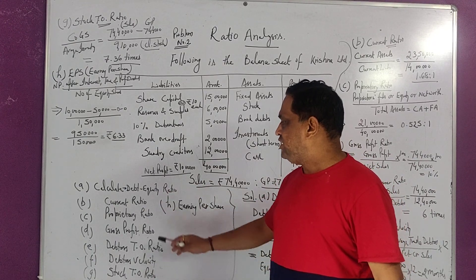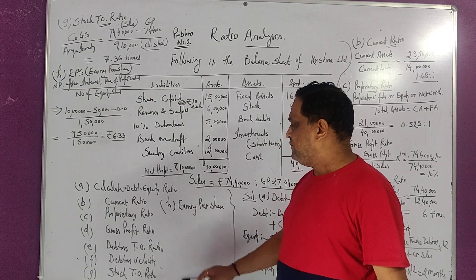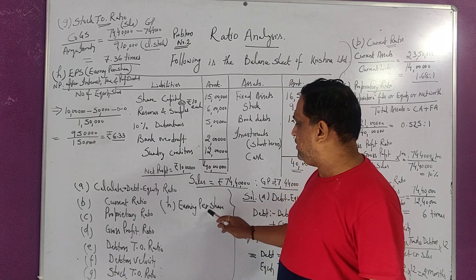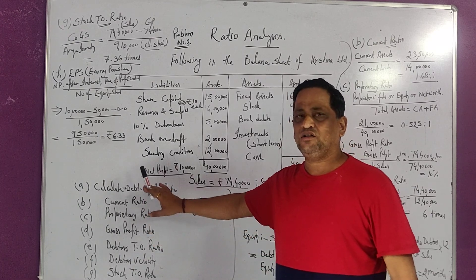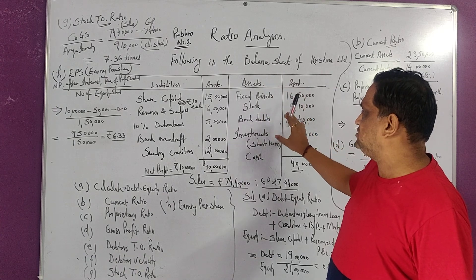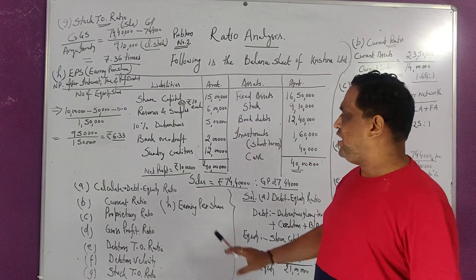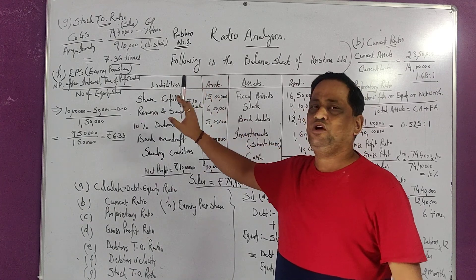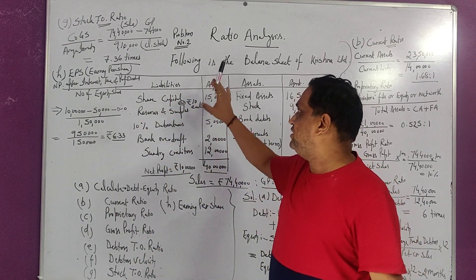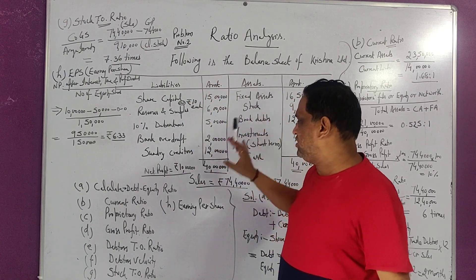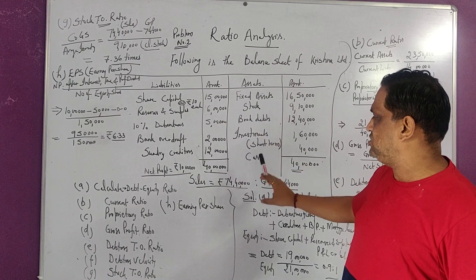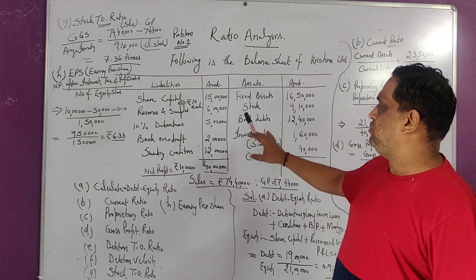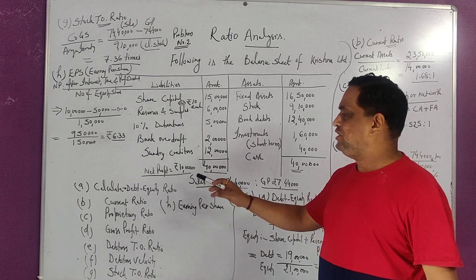Now we have to calculate: debt-equity ratio, current ratio, proprietary ratio, gross profit ratio, debtor turnover ratio, debtor velocity, stock turnover ratio, and earning per share. There are some new ratios here and we have to calculate the performance of management using this balance sheet and apply the tool of ratio analysis.